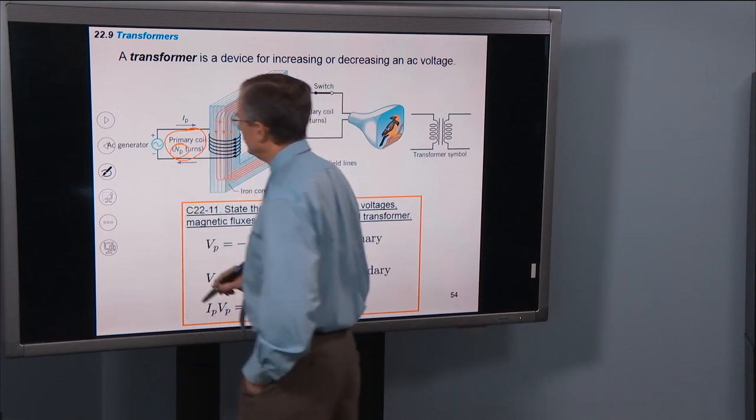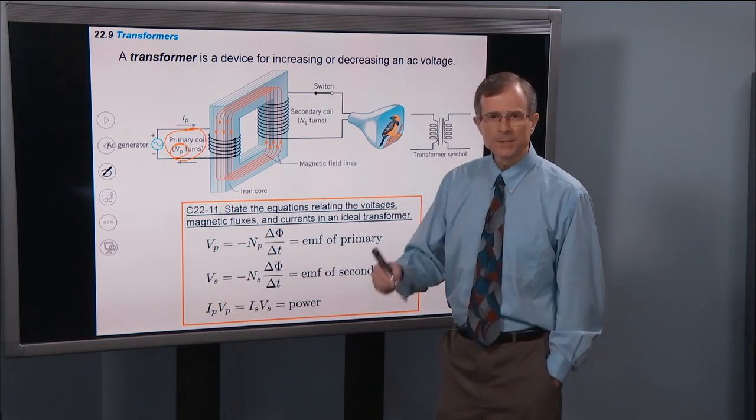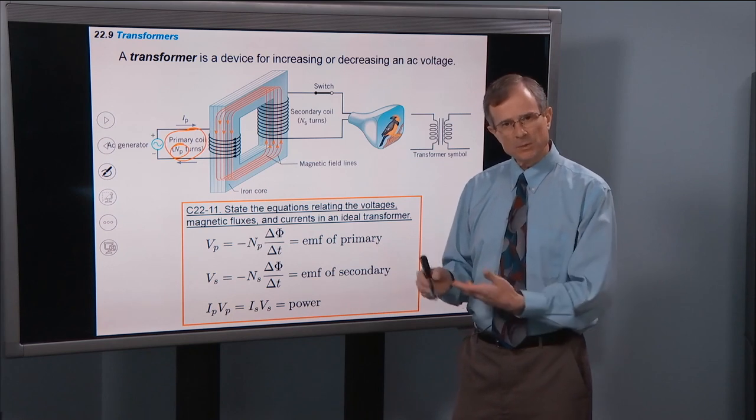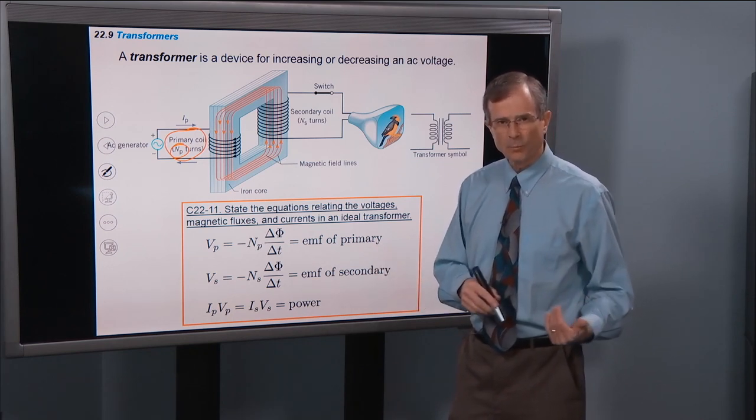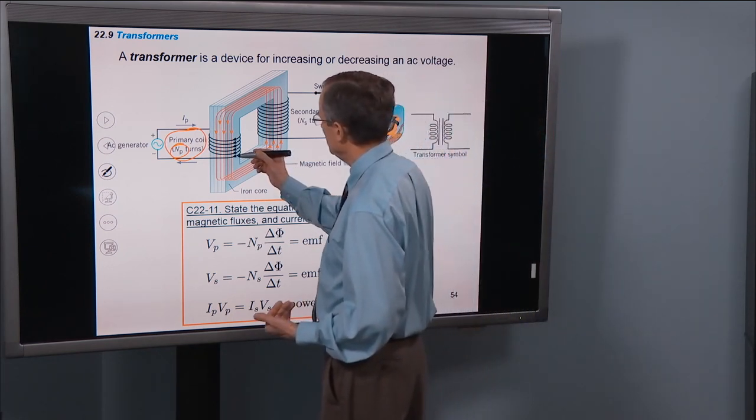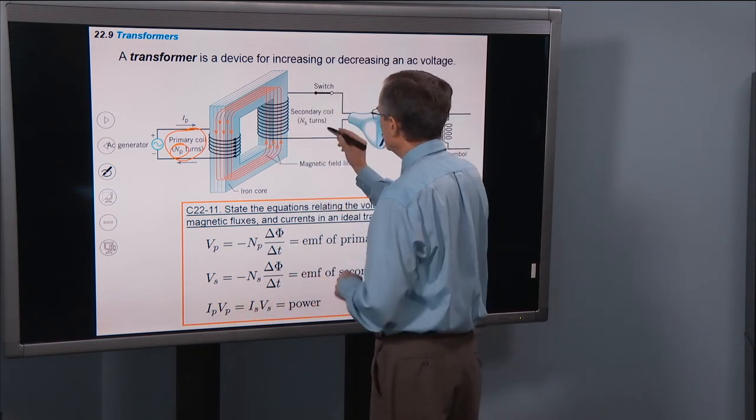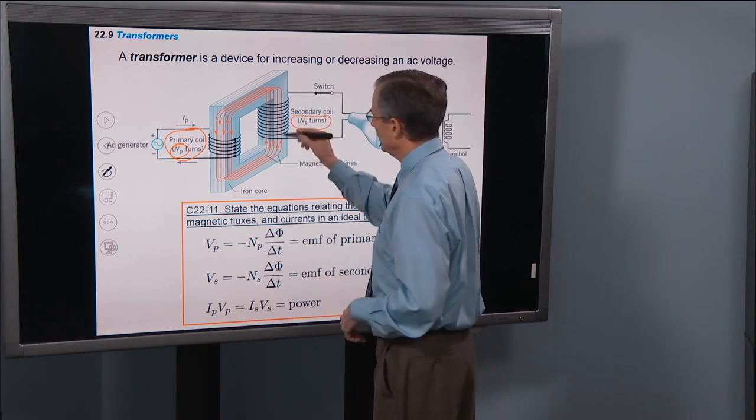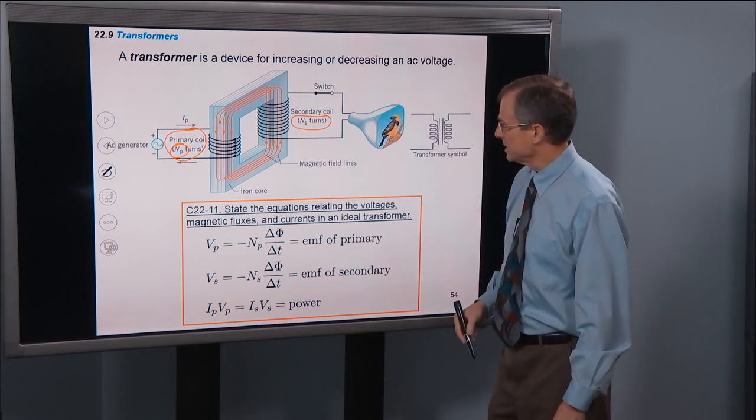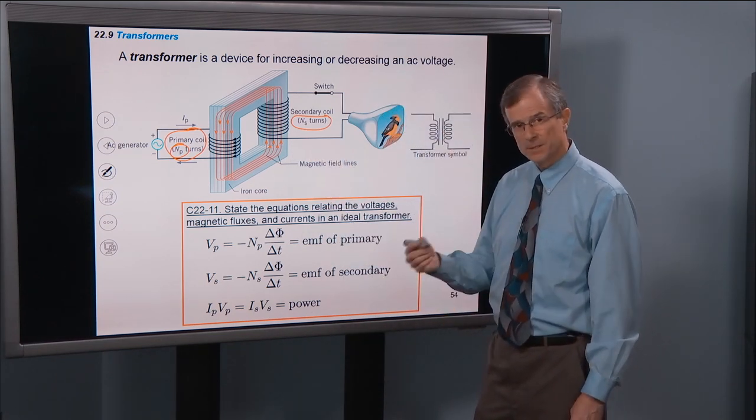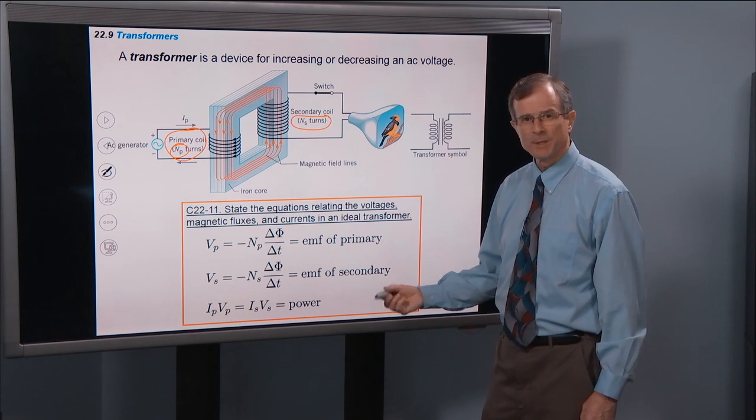In the primary, we'll use Np to denote the number of turns of wire in the primary, which looks to be 1, 2, 3, 4, 5, 6 or so. Then the secondary has maybe 8 or 10 turns in it. So, we'll use Ns is the variable that we'll use to describe the number of turns.